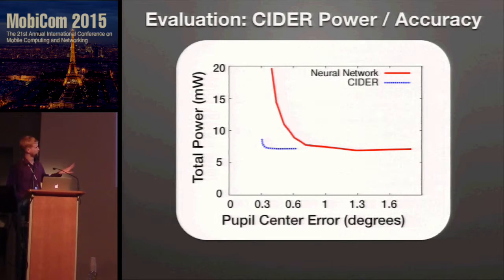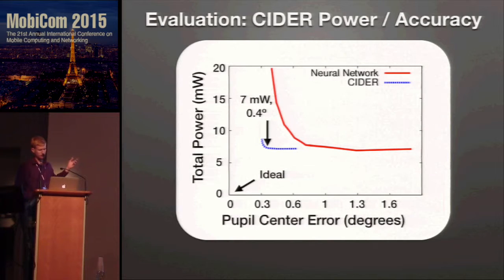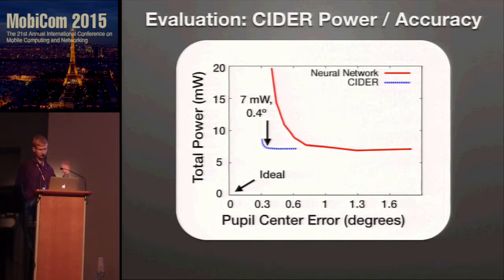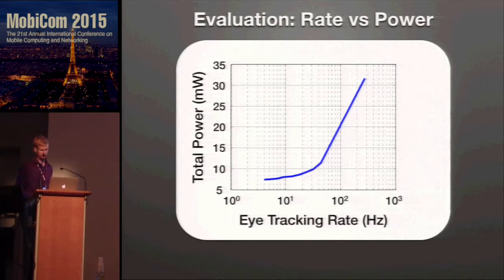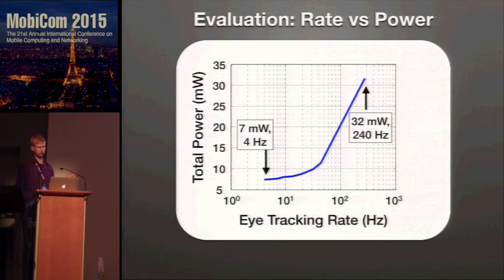Our major result compares the accuracy and accuracy-power trade-off of CIDR versus just using the neural network alone. On the plot, CIDR outperforms the neural network — better performance per unit power in every configuration. At the performance elbow, CIDR consumes about seven milliwatts with approximately 0.4 to 0.5 degrees of error. On rate versus power: at four hertz you're around seven milliwatts; at the high end, 200-plus hertz still only incurs 30 to 40 milliwatts.